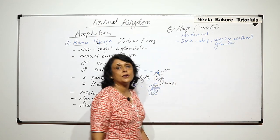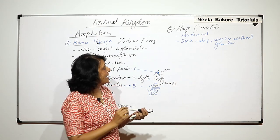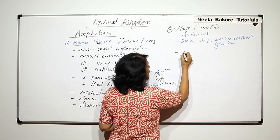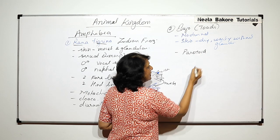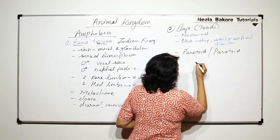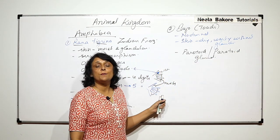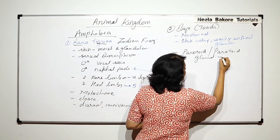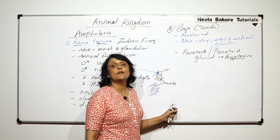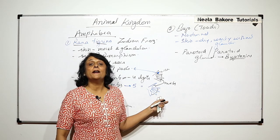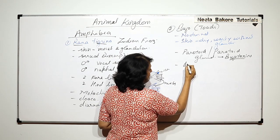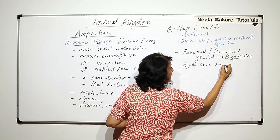Because toads are normally terrestrial, they don't need moist skin. However, they have one gland present just behind the tympanum, known as the paratoid gland. This gland secretes buffo toxins, which serve as a defense mechanism — toxic substances produced to defend themselves.